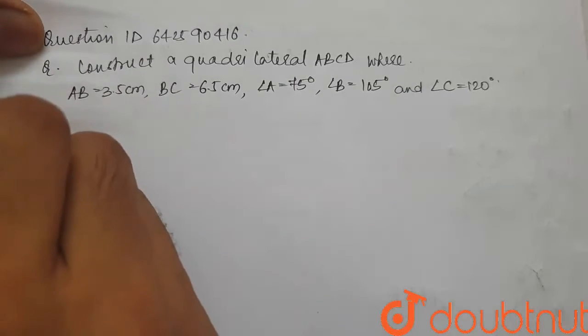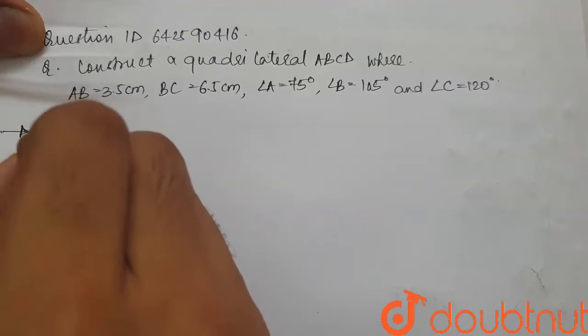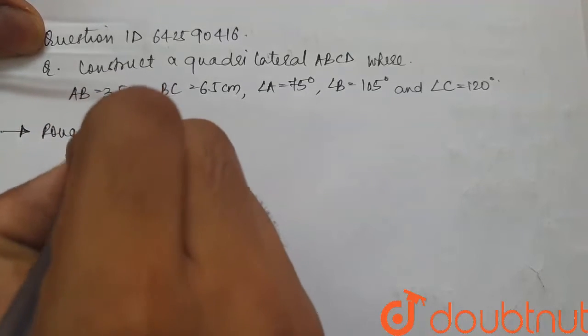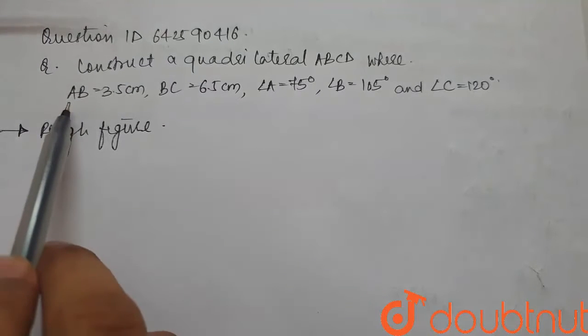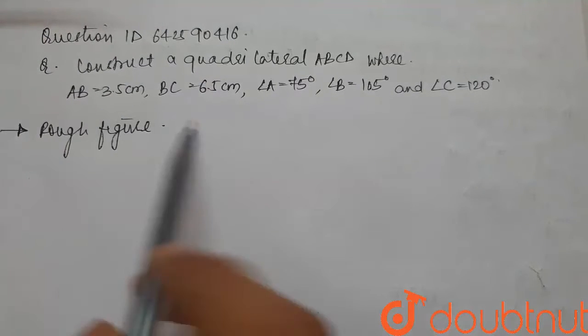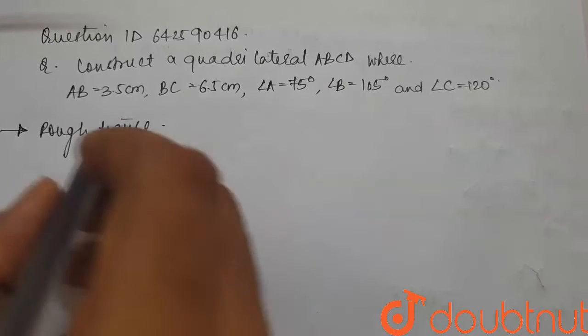So, let's first make the rough figure. Now, we'll start by making side AB since angle A and angle B are given to us.